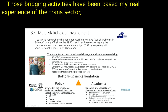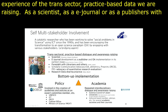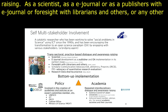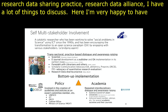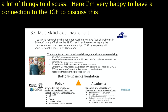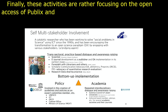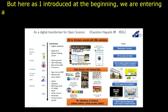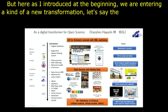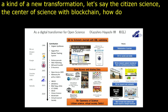These bridging activities have been based on real experience of trans-sectoral, practice-based dialogue and awareness raising — as a scientist, e-journal publisher, working with librarians, and in research data sharing practice such as the Research Data Alliance. I'm very happy to have a connection to IGF to discuss this. These activities have focused on open access of publications and research data sharing by policy development. But we are entering a new transformation: citizen science, the virtual society, decentralized science with blockchain. I look forward to implementing this for the future.